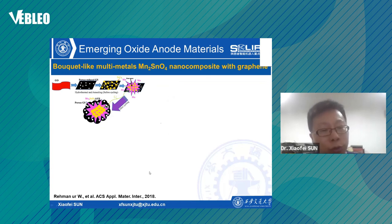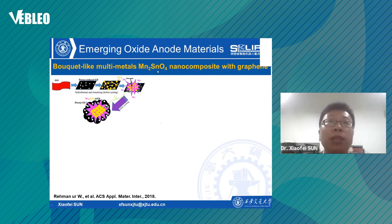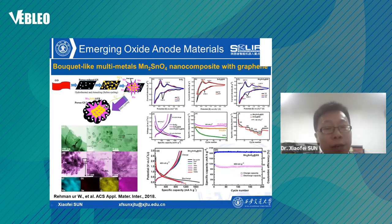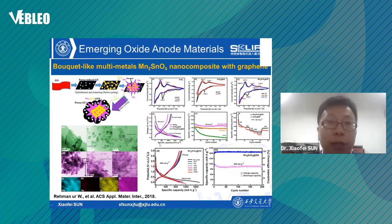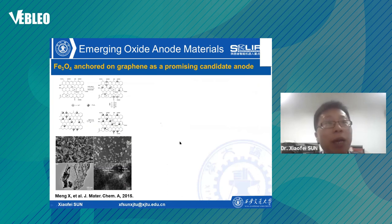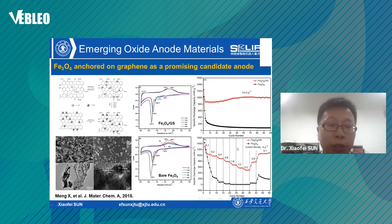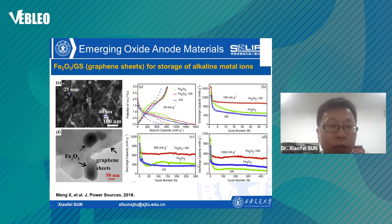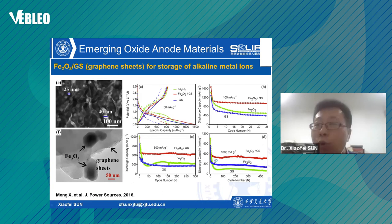Beyond single metal oxide, multi-metal oxides such as manganese oxide with bunch-like morphology engineered with graphene were also investigated, showing much better performance compared to single metal oxide materials. Besides manganese oxide, pyrochore oxide was also investigated by forming composites with graphene, showing better performance compared to the base materials. A similar strategy was also demonstrated in iron trioxide and proved somewhat workable.